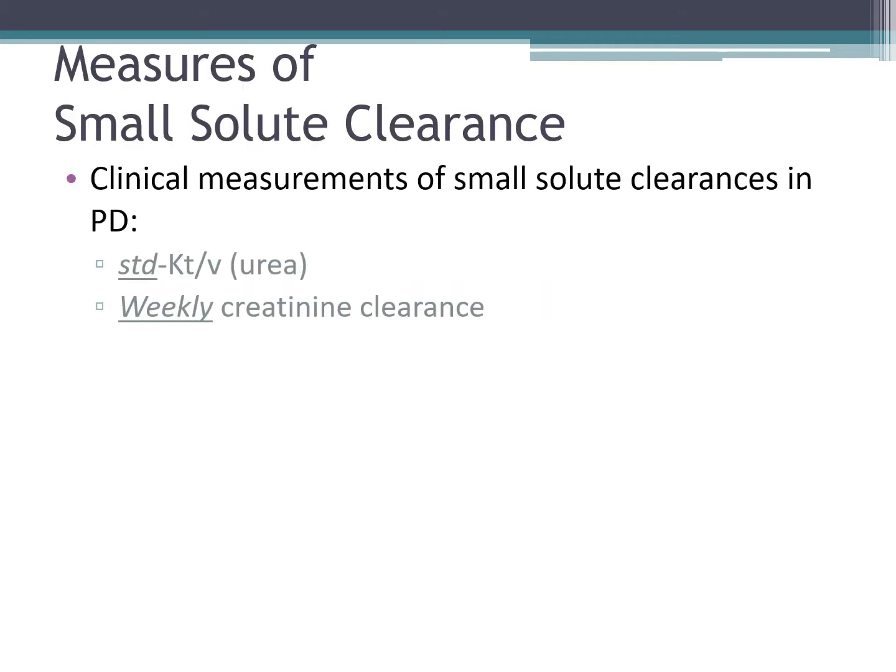In peritoneal dialysis, the clinical measurements of small solute clearance is the standardized Kt over V urea, or sometimes called the weekly Kt over V urea, and also the weekly creatinine clearance.